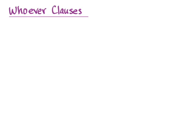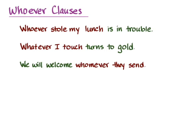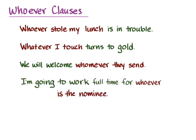So what are we talking about here? Let me give you some examples in English. 'Whoever stole my lunch is in trouble.' 'Whatever I touch turns to gold.' 'We will welcome whomever they send.' 'I'm going to work full time for whoever is the nominee.' In each of these sentences, there's a clause that indicates some indefiniteness, some doubt about or lack of knowledge about one of the referents of the sentence, but it's important to indicate that person even though we don't know the specifics of who or what it is.